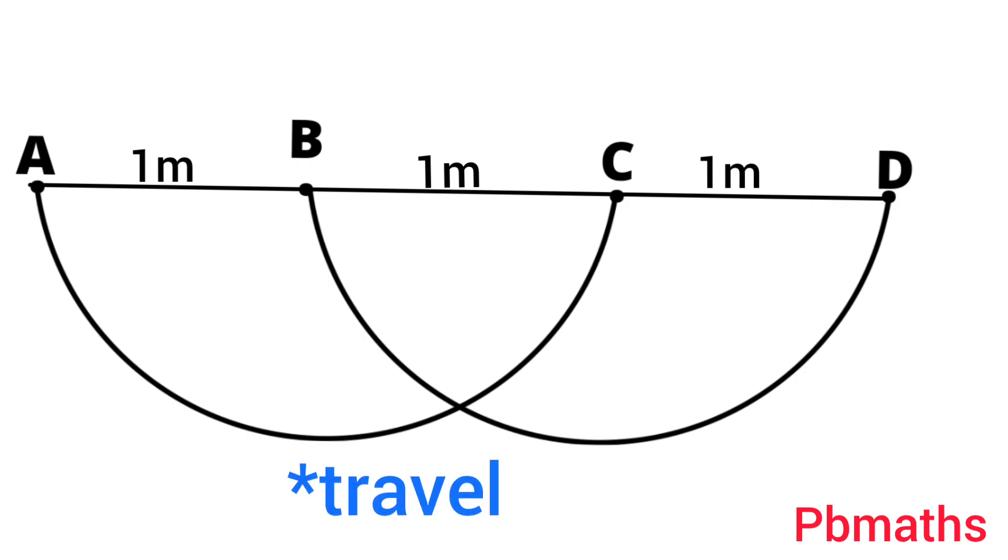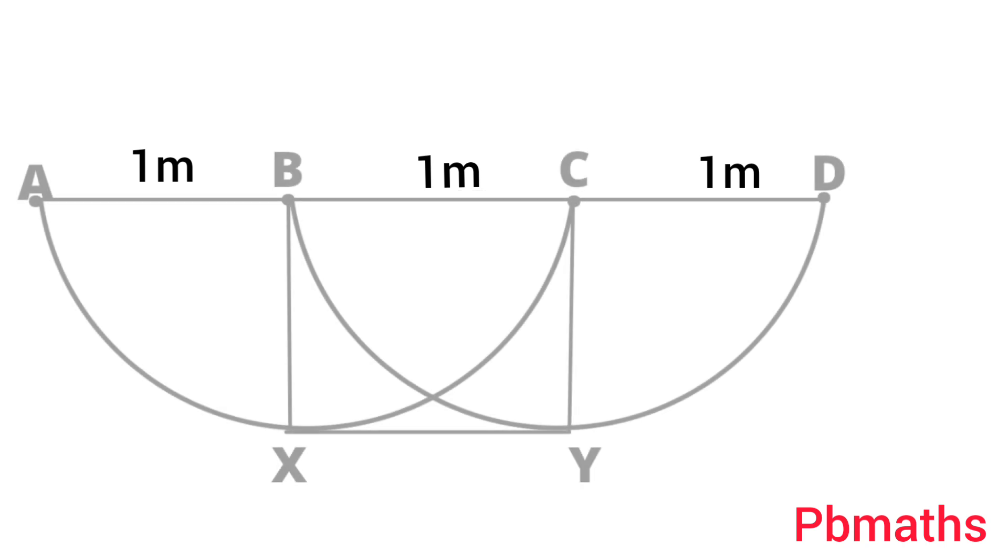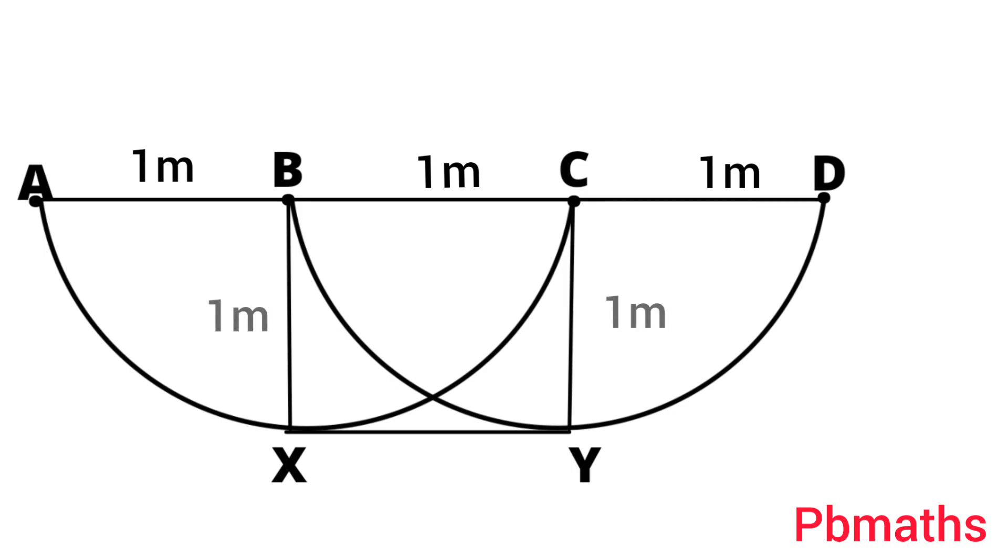And also, let's drop two perpendiculars BX and CY in those semicircles. Now, ant must go along AX, XE, EY and YD or AX, XY, YD to reach that sugar particle. It has two routes.